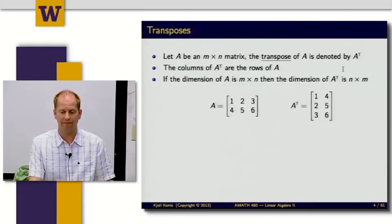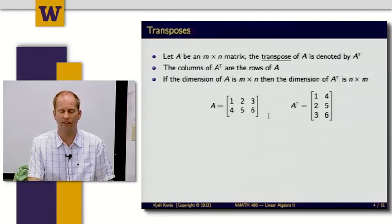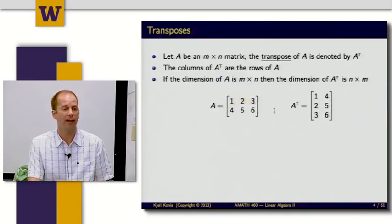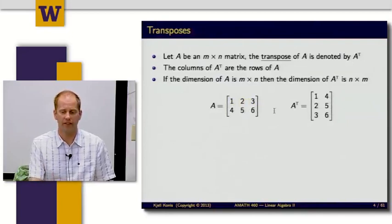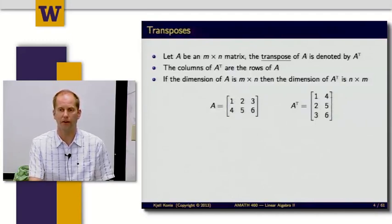As a concrete example, if A is the matrix with first row 1, 2, 3 and second row 4, 5, 6, then the first column of A transpose is 1, 2, 3. When A is not square, note that the dimension changes too — it goes from being a 2 by 3 matrix to A transpose having 3 rows and 2 columns.